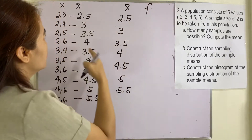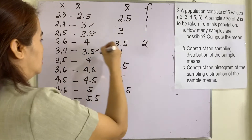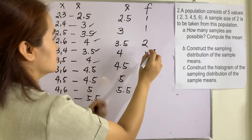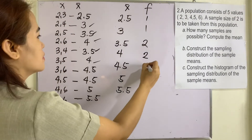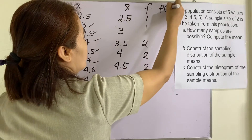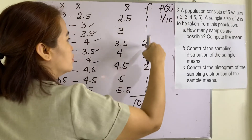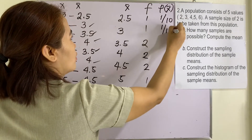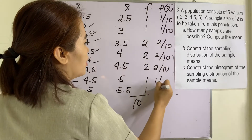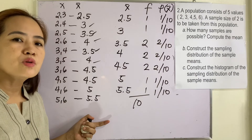Getting the frequency: x-bar 2.5 has frequency 1; 3 has frequency 1; 3.5 has frequency 2; 4 has frequency 2; 4.5 has frequency 2; 5 has frequency 1; and 5.5 has frequency 1. The total is 10. So the probabilities P(x-bar) are: 1/10, 1/10, 2/10, 2/10, 2/10, 1/10, and 1/10. This is the sampling distribution of the sample means.